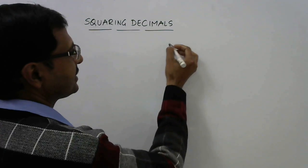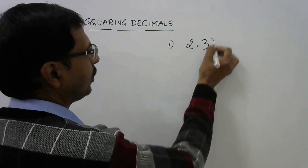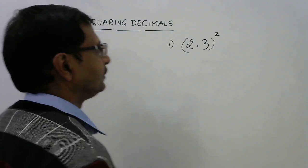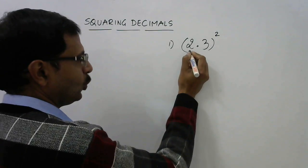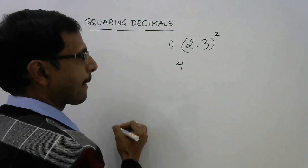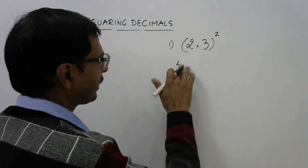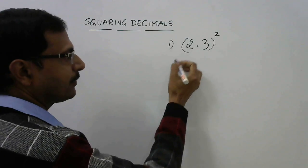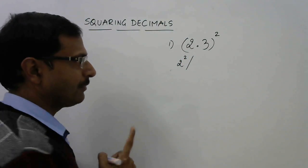Suppose we have the first example, (2.3)². Now how do we square 2.3? See, square of 2 is 4. I'll write the steps also so that you can remember the exact method. Square of 2 is the first thing we will write.